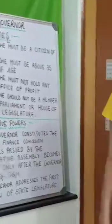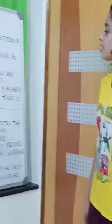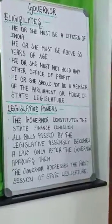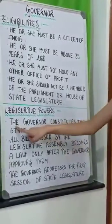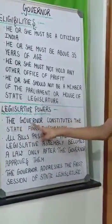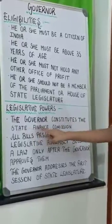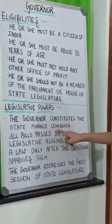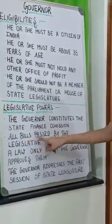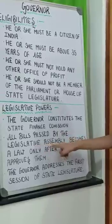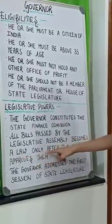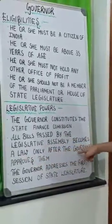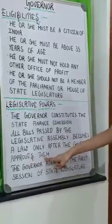These are the eligibilities of a Governor. Now there are some legislative powers of the Governor. The Governor constitutes the State Finance Commission. All bills passed by the Legislative Assembly become a law only after the Governor approves them.